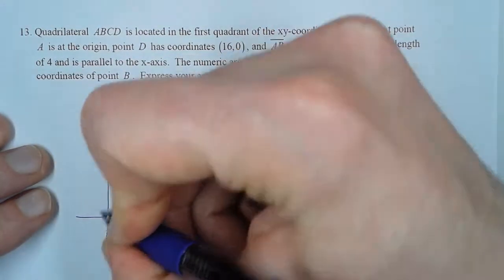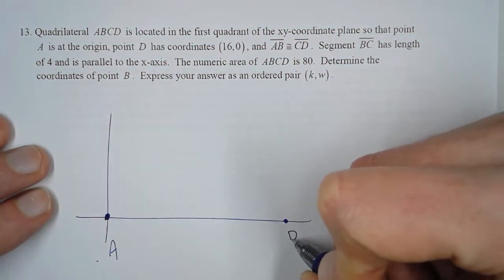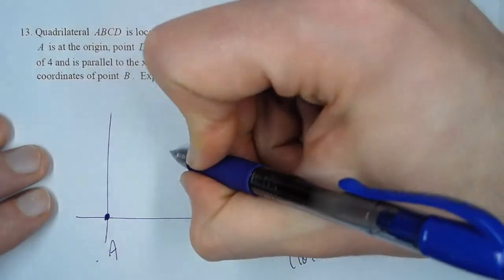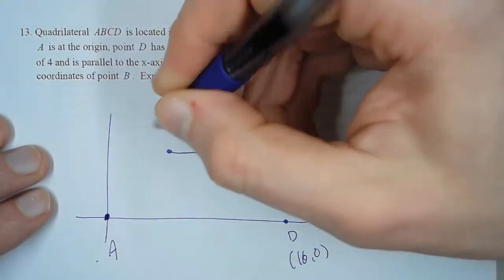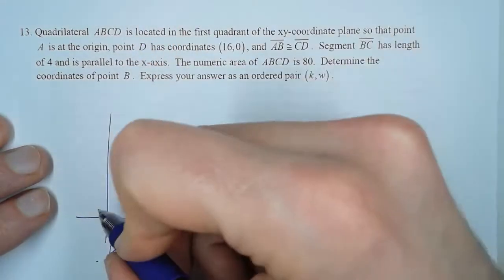All right, so here is point A, here is point D, that's (16, 0). B and C are up here, and we know that B and C have a length of 4.